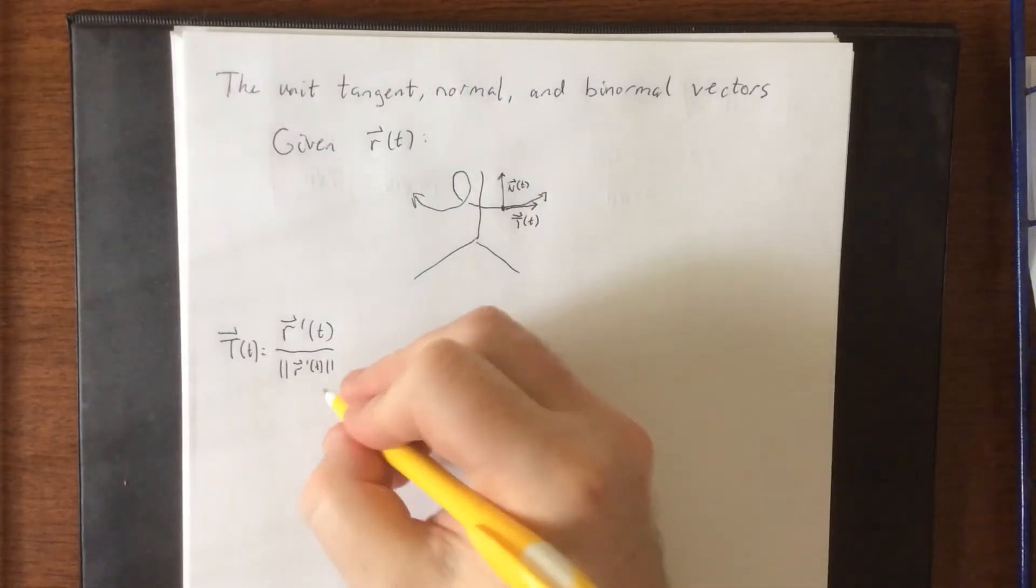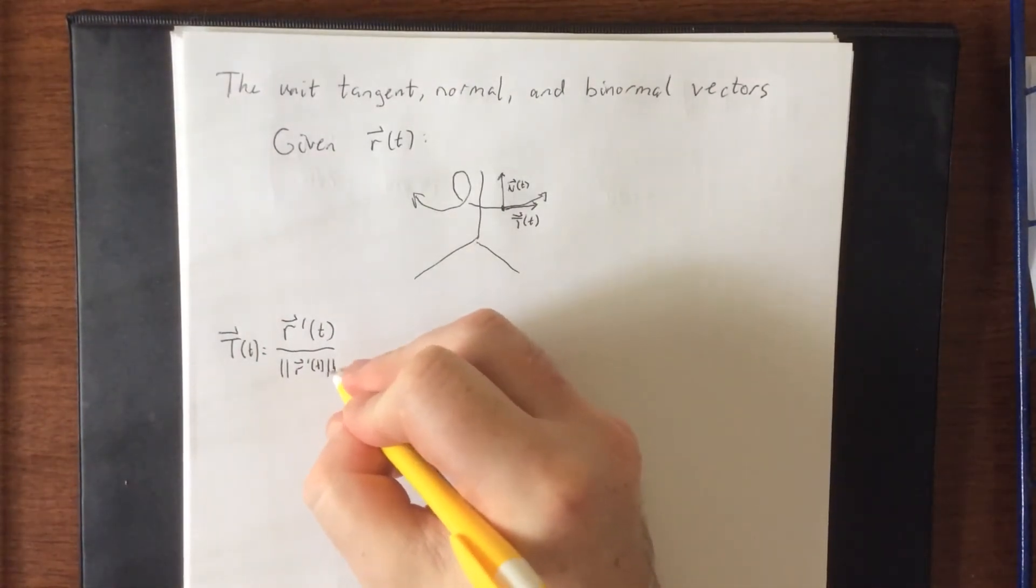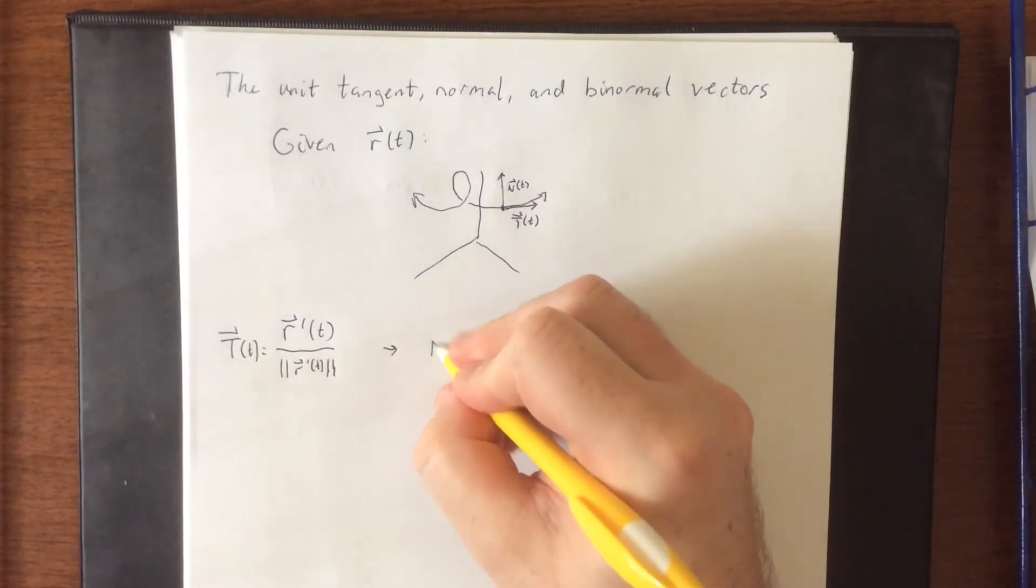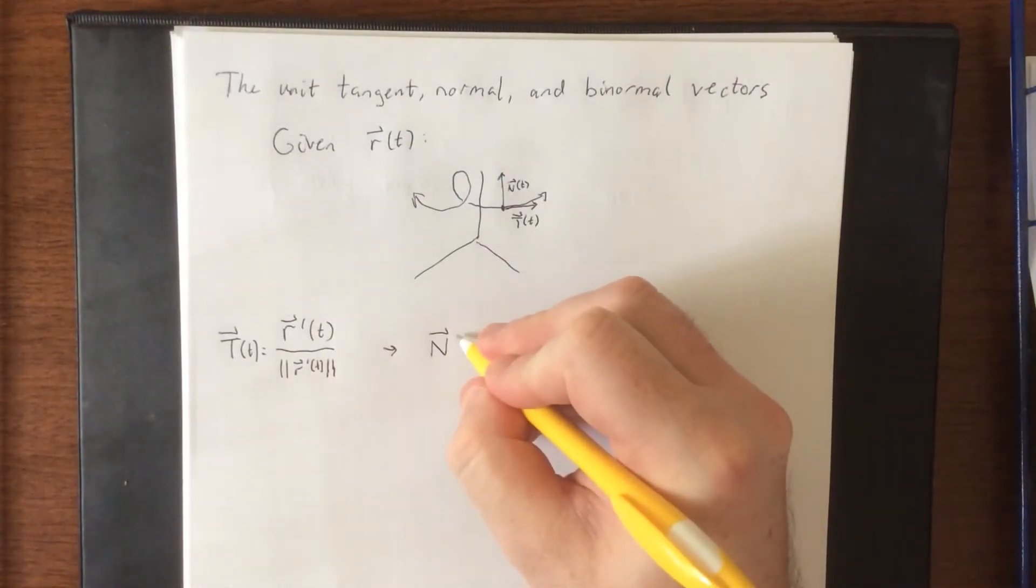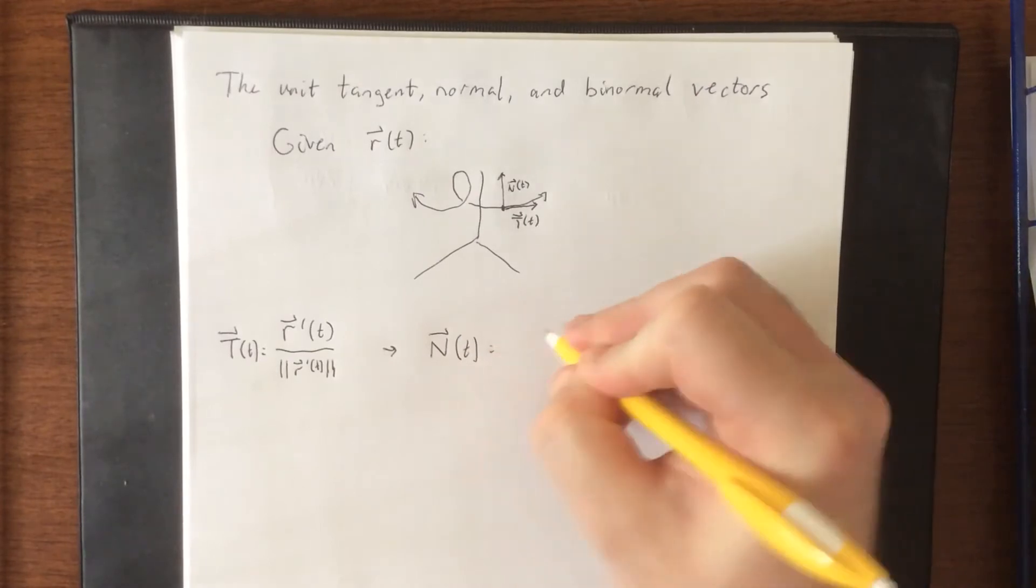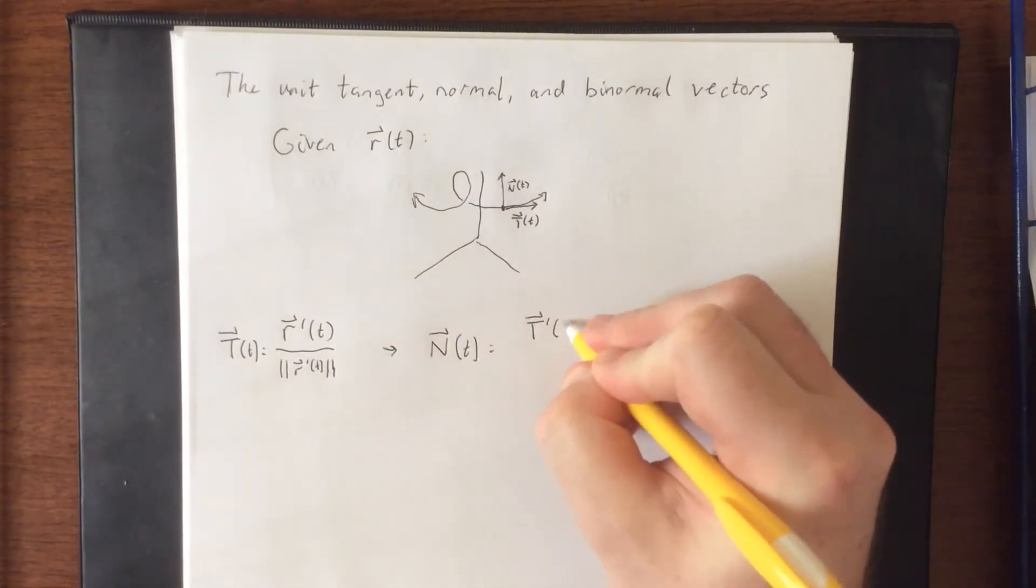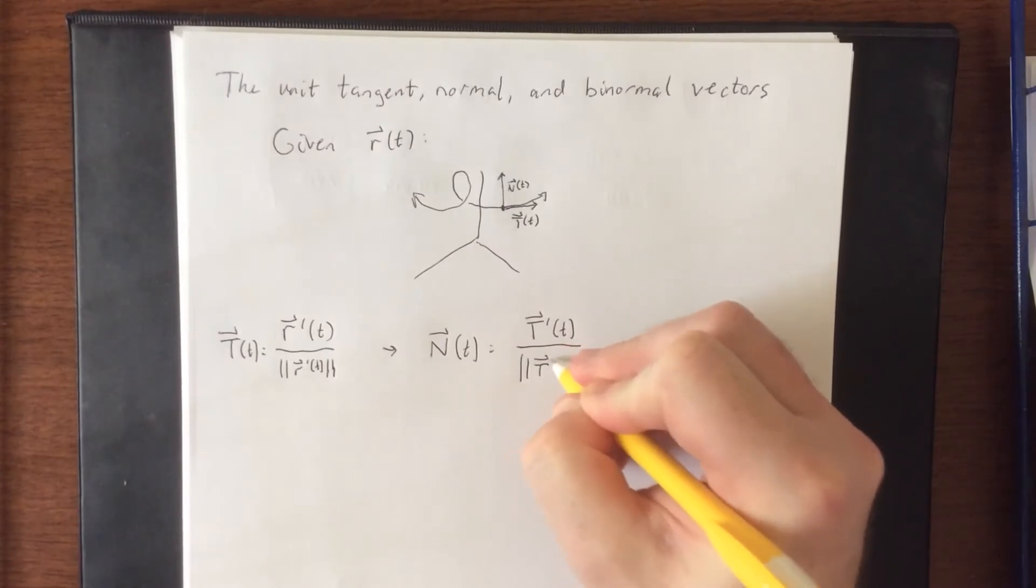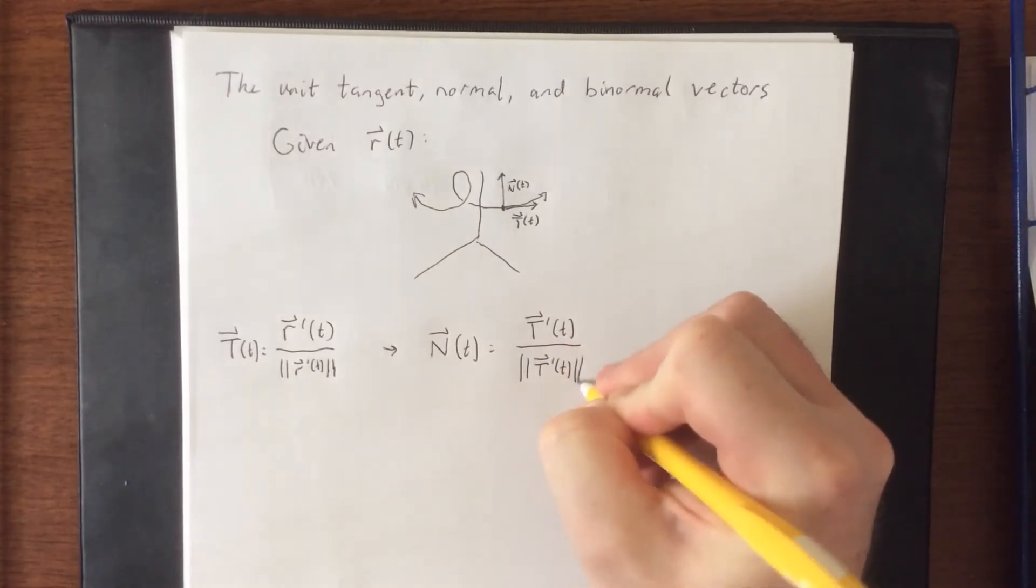If you were to do the exact same thing to T as what we just did to r, you would wind up with the unit normal vector. So take the derivative of the unit tangent vector and then divide it by the magnitude of the derivative of the unit tangent vector.